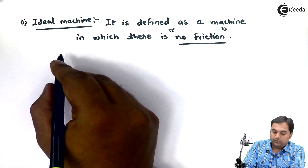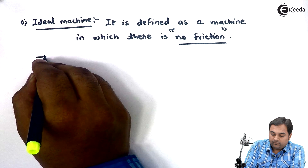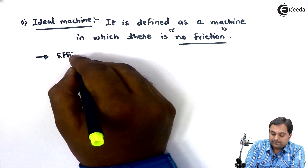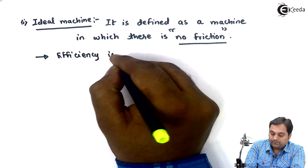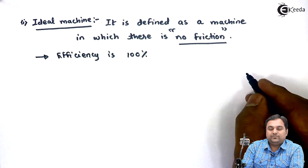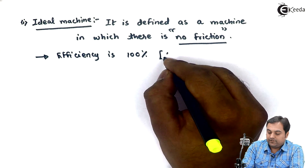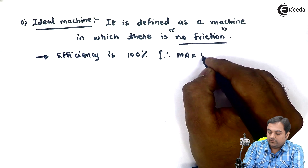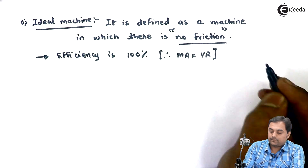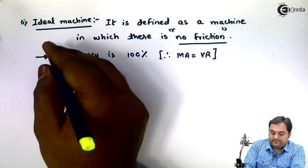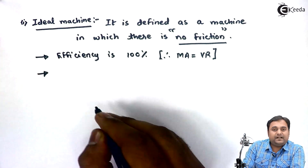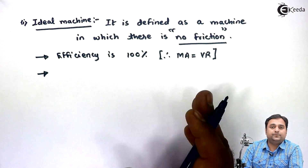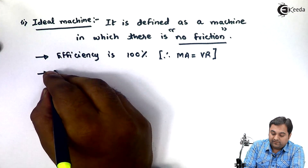When there is no friction, it means efficiency is 100%. Therefore, mechanical advantage is equal to velocity ratio.